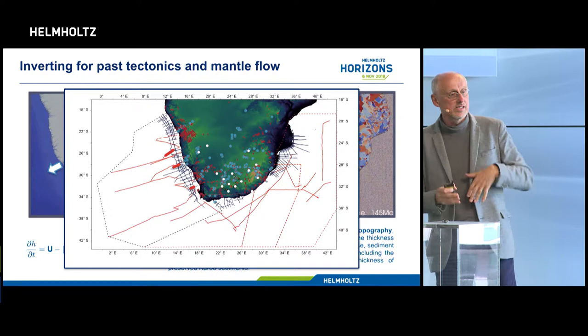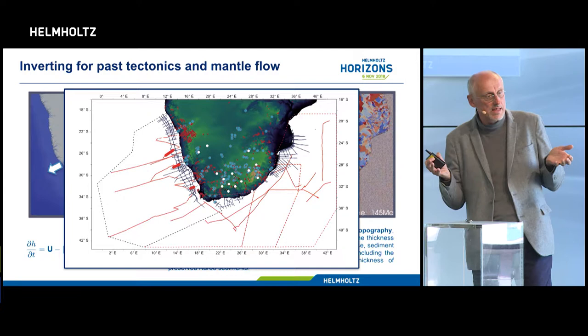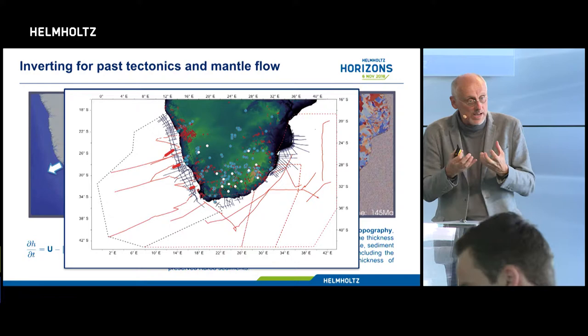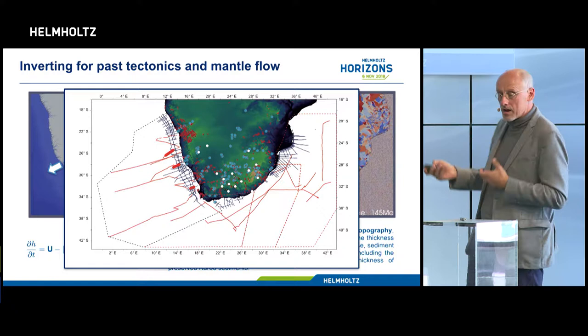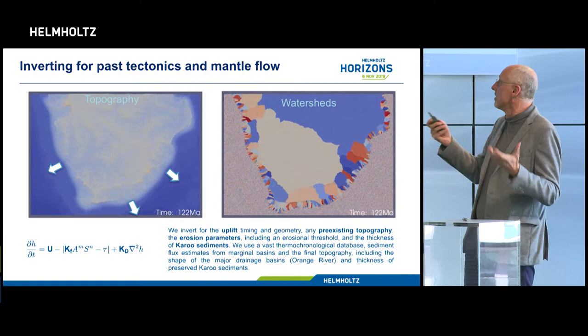Southern Africa is very peculiar — it sits about a thousand meters above sea level with no obvious reason. There's no mountain that should be there, no tectonic activity; it has been there for over a hundred million years. We used the shape of the present-day high-altitude plateau as a constraint, together with a large amount of data collected by geophysicists across Africa through seismic sounding and geological surveys. We put all that data into our inversion scheme and used a computer cluster to reproduce the long-term evolution of Southern Africa.